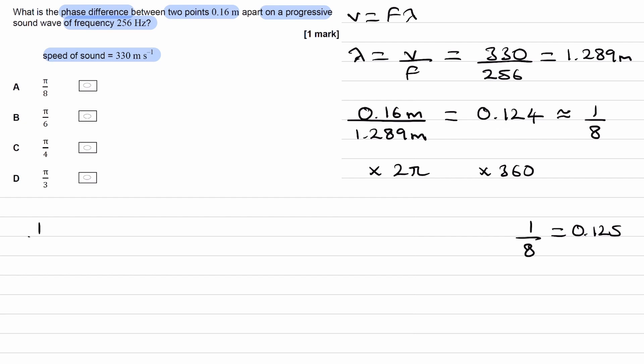And then we can do an eighth multiplied by 2π to convert that fraction of a cycle between the two points to radians. This then gives π over 4, which is C.